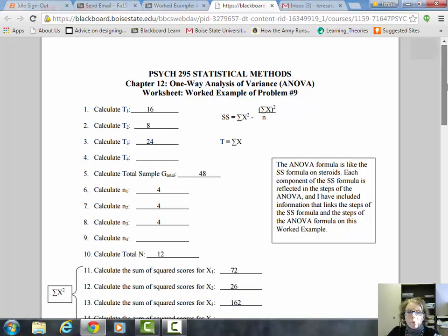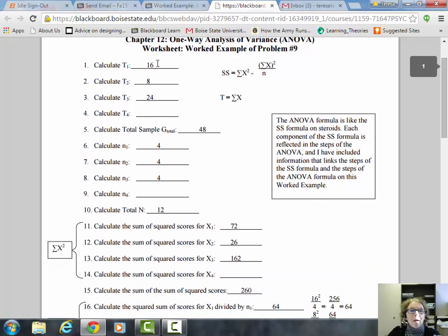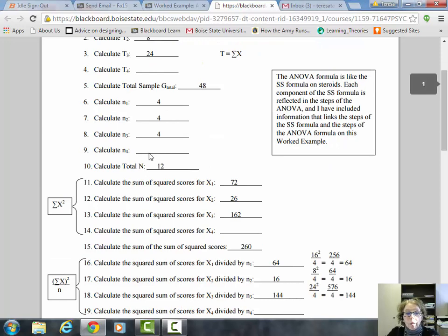The T values are the total scores for each treatment group, synonymous with sum of X. When you add 16, 8, and 24 up, that's where the 48 comes from. There are four scores in each treatment group, and the total N across all three samples is 12.